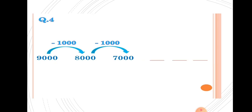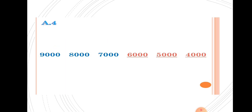Next example — listen, students. The pattern is: 9000, 8000, 7000. From 9000 to 8000, decreased by 1000. From 8000 to 7000, decreased by 1000. So students, we have to subtract 1000 to get the next number. That is 7000 minus 1000 equals 6000. Then 6000 minus 1000 equals 5000. Then 5000 minus 1000 equals 4000.